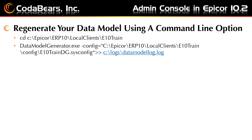To actually run the command line option, you'll open a PowerShell or Windows command window and change the directory to the client path where the data model generator executable is located. The first bullet point has the command for changing the directory to where we have our data model generator dot exe located. Then you enter the command line shown with the dash config option as an optional parameter if you have customized your sysconfig file to use the tool settings shown on the previous slide. You will then see results in the command line window, unless you have the last section outputting the results to a log file instead. If you stop right after the quotes, the results would show in your command line window.